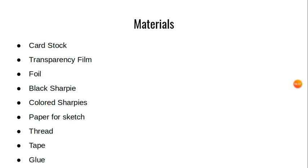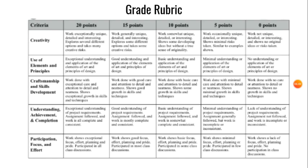The materials for the project are: card stock, transparency film, foil, a black Sharpie, colored Sharpies, paper for sketching, thread, tape, and glue. And this is the grading rubric. I'd be grading on creativity, use of elements and principles of design, craftsmanship, understanding of the project, achievement and completion of it, and participation.